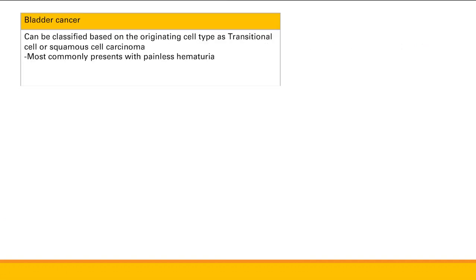Bladder cancer can be classified into two types based on originating cell type: transitional cell carcinoma or squamous cell carcinoma. This cancer most commonly presents with painless hematuria.